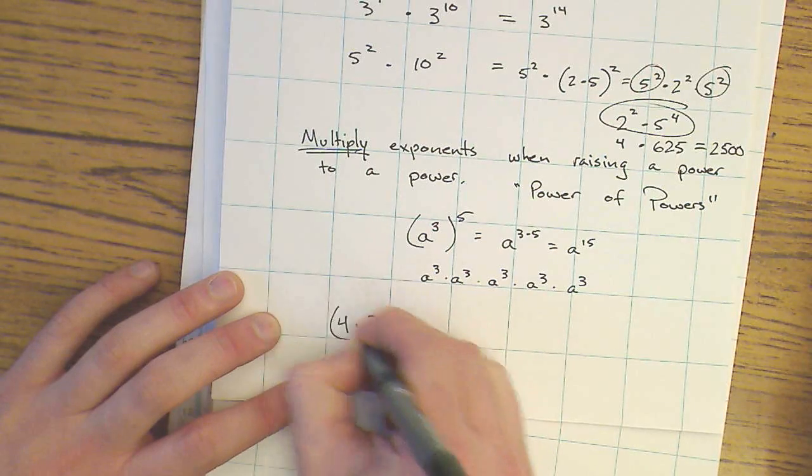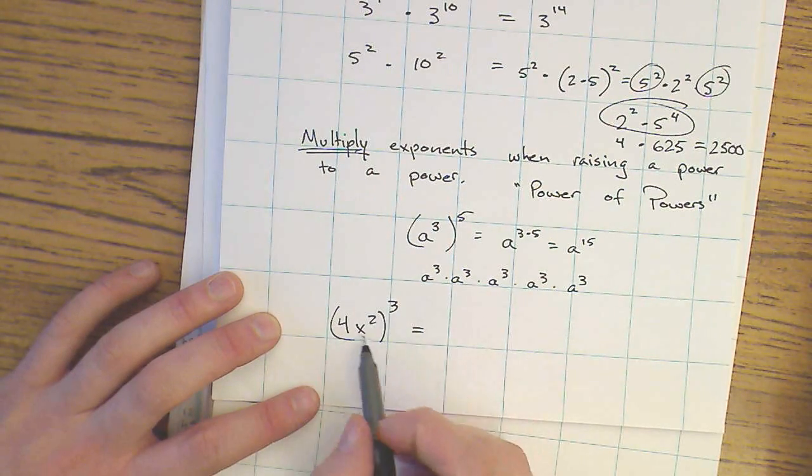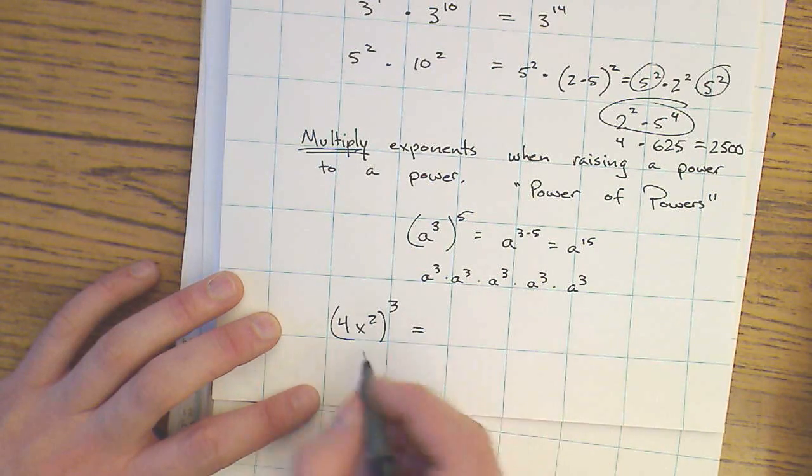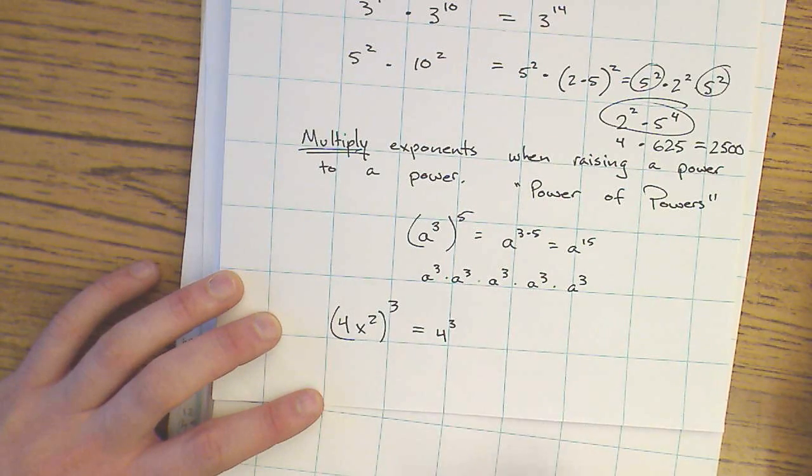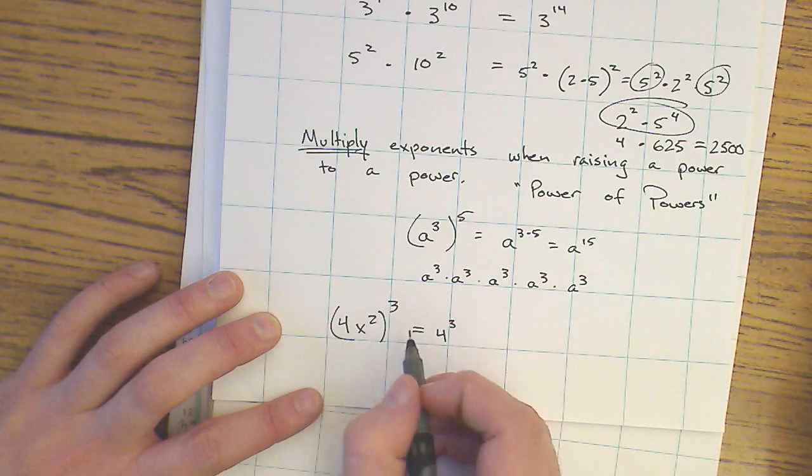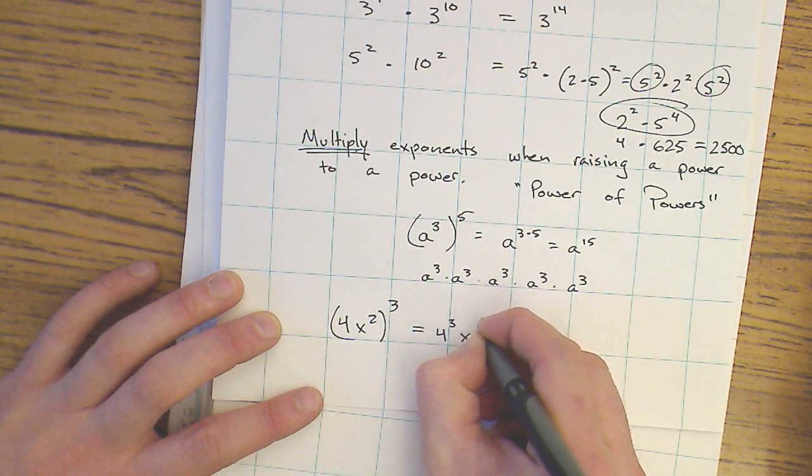In a situation like this, think of 4x to the 2nd times 4x to the 2nd times 4x to the 2nd. Again, I'm going to multiply all of the 4s, so I'm going to raise the 4 to the 3rd power. And I'm going to raise x to the 2nd to the 3rd power, so x to the 2nd, x to the 2nd, x to the 2nd, which gives me x to the 6th power.